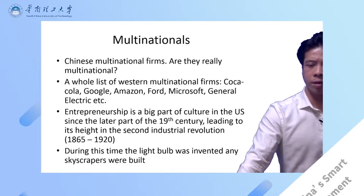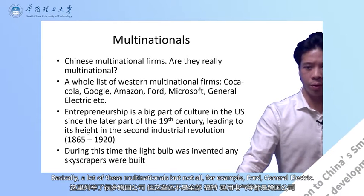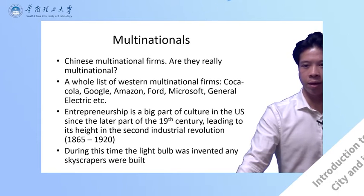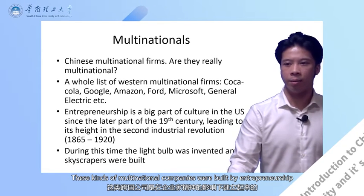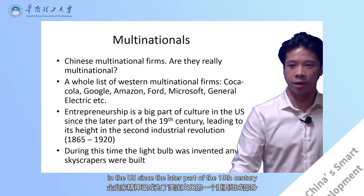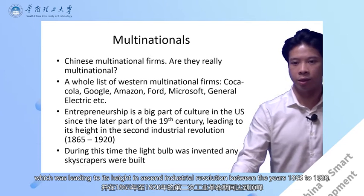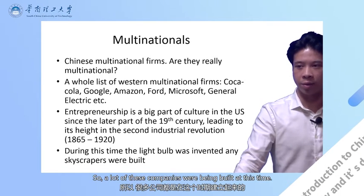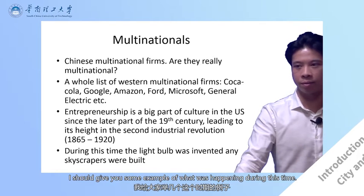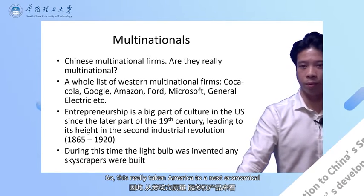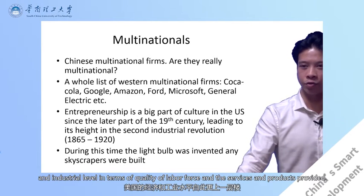A lot of these Western multinationals — like Ford and General Electric — were built by entrepreneurship, which was a big part of US culture, leading to its height in the Second Industrial Revolution between 1865 and 1920. Many of these companies were being built at this time. Things like the light bulb were invented and skyscrapers were being built, taking America to a new economical and industrial level in terms of quality of labour force and the services and products provided.